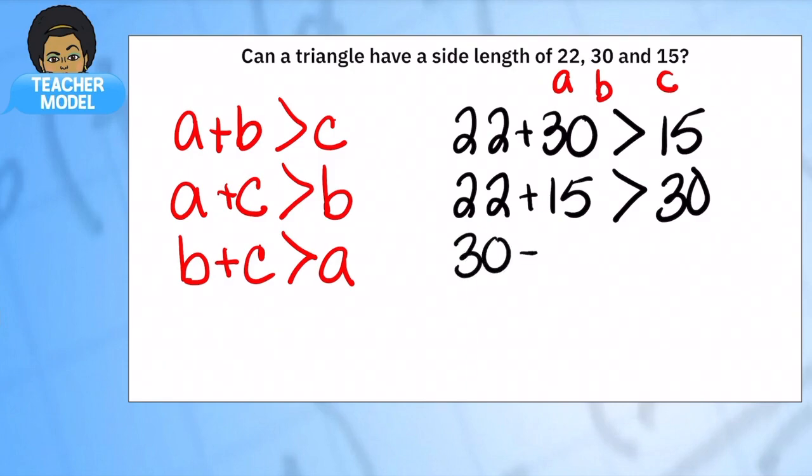And so let's try the third one. Would 30 plus 15 be bigger than 22? I don't even have to do the addition. Yes, this is true, yes this one is true, and yes this one is true. So our overall is yes, this will make a triangle. Hit pause and jot this down into your notes.